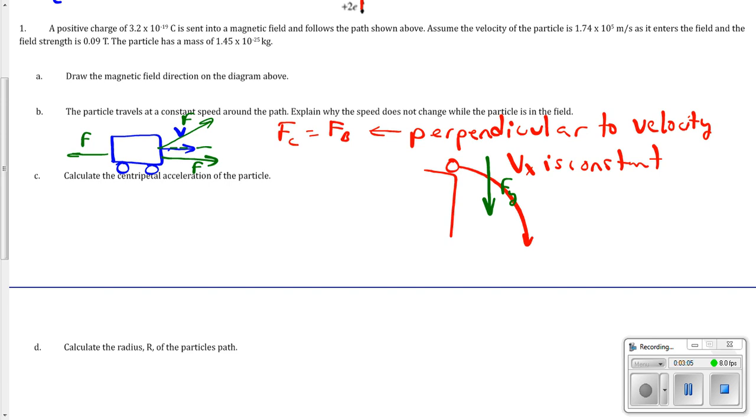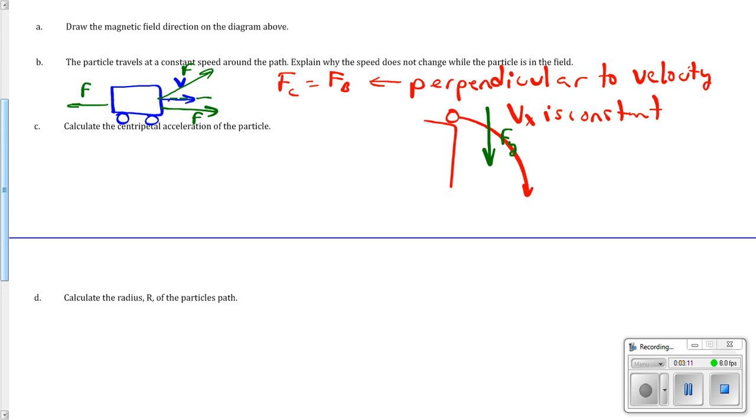And if there's no change in velocity, the work is also going to be zero. Because remember, work is change in energy, which is change in kinetic energy, in this case, which would be no velocity. More on that another day, though.